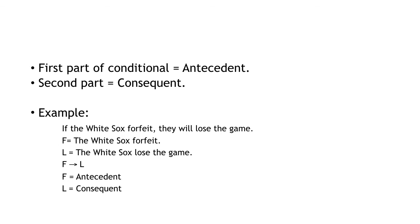A little bit of jargon to learn with the conditional: the first part of a conditional statement is called the antecedent; the second part is called the consequent. For example, 'If the White Sox forfeit, they will lose the game.' F = the White Sox forfeit; L = the White Sox lose the game; F → L. F is the antecedent — the thing in front of the arrow. L is the consequent — the thing after the arrow. In ordinary English, the antecedent is the 'if' part and the consequent is what comes after the 'then.'